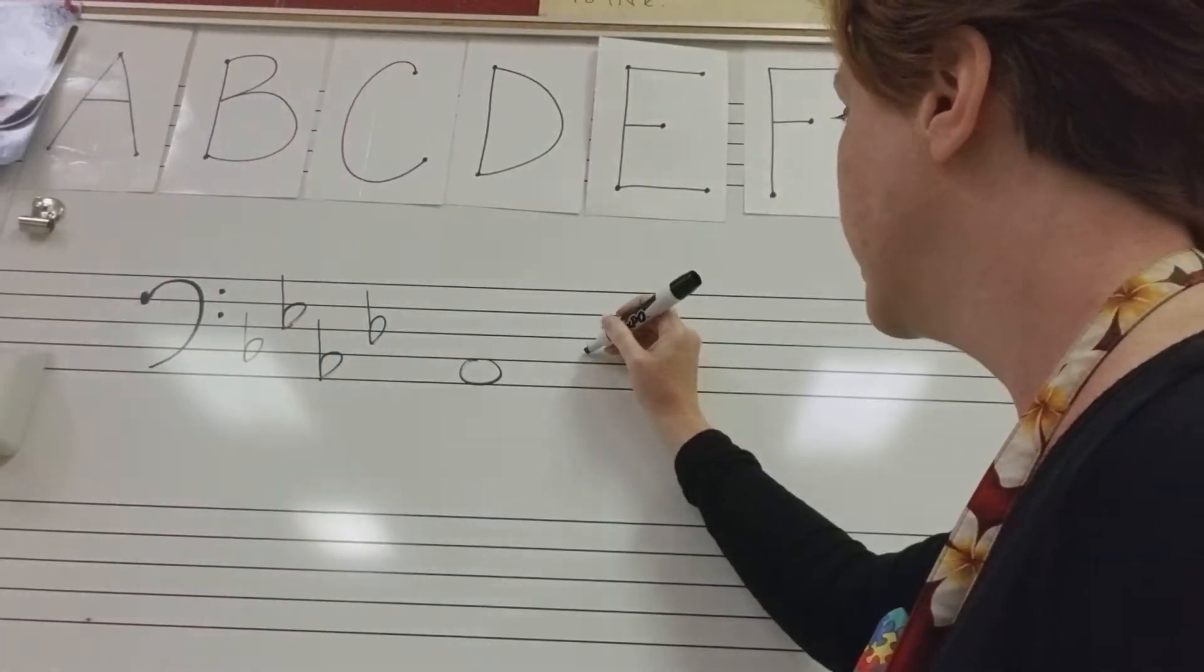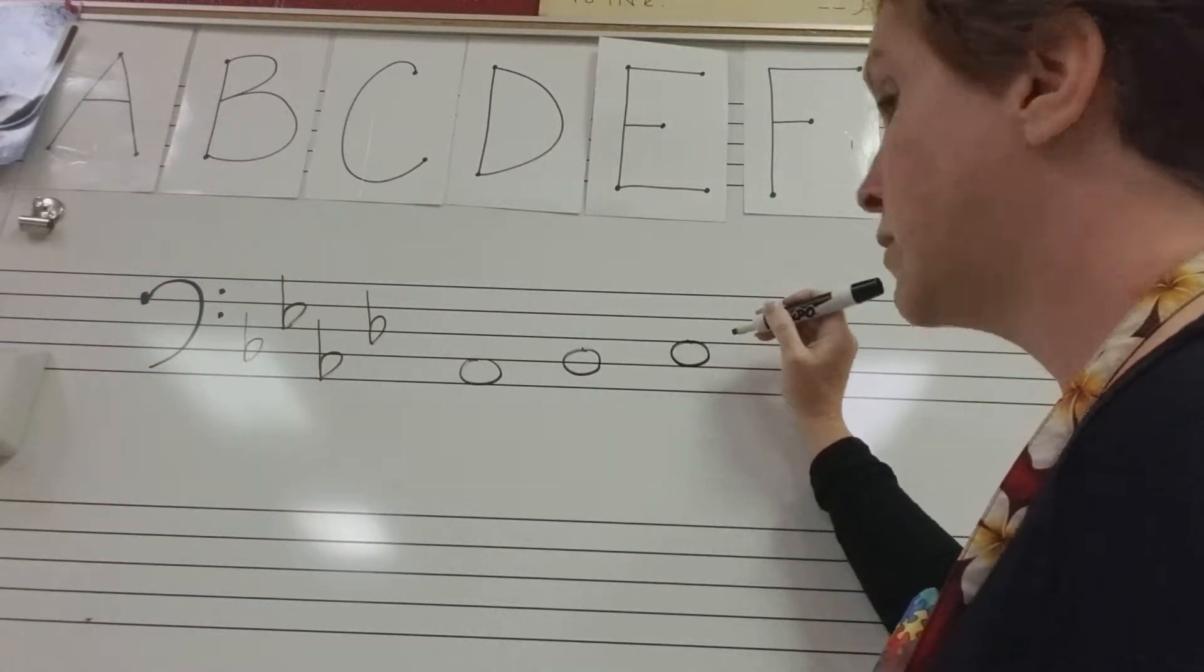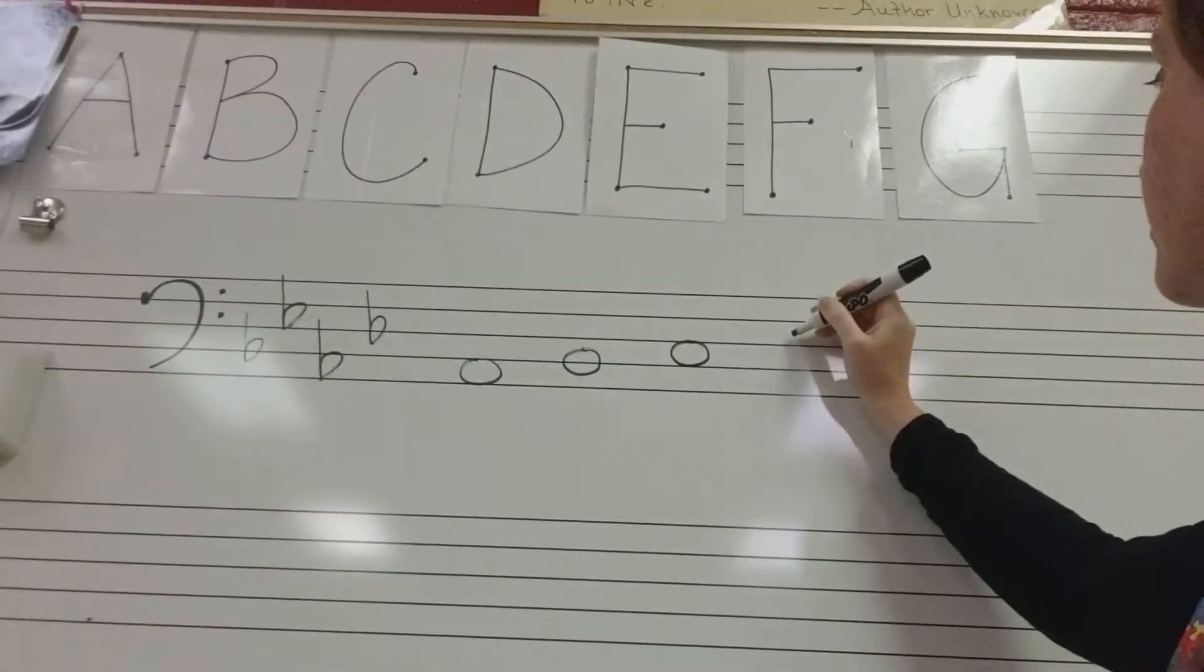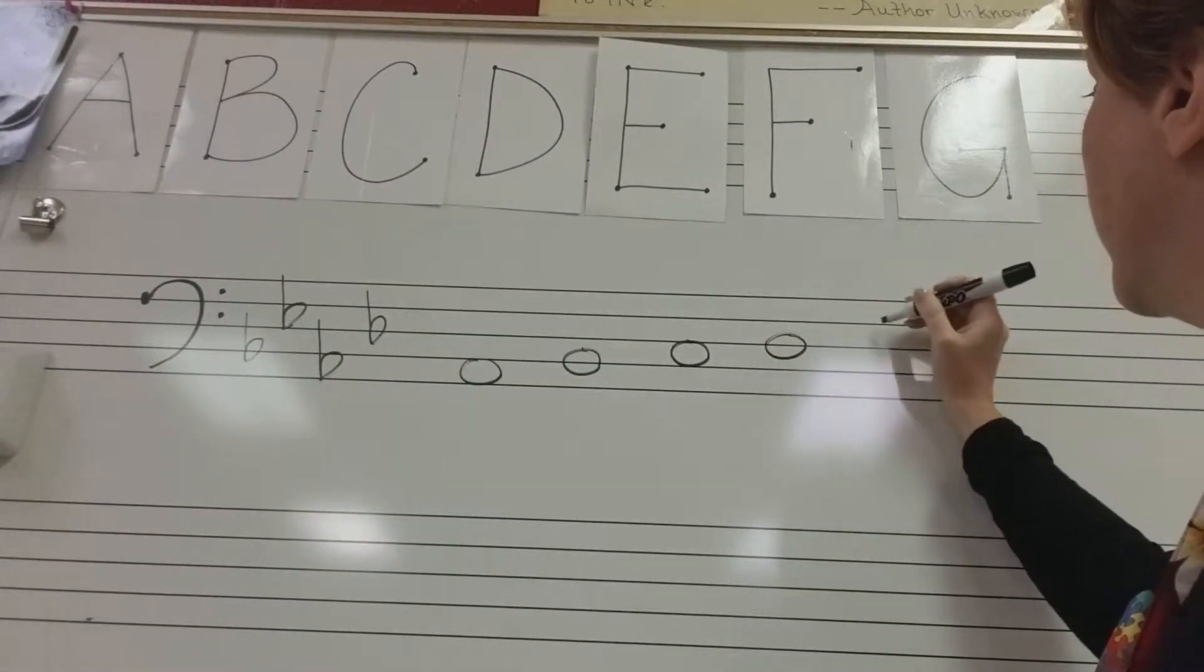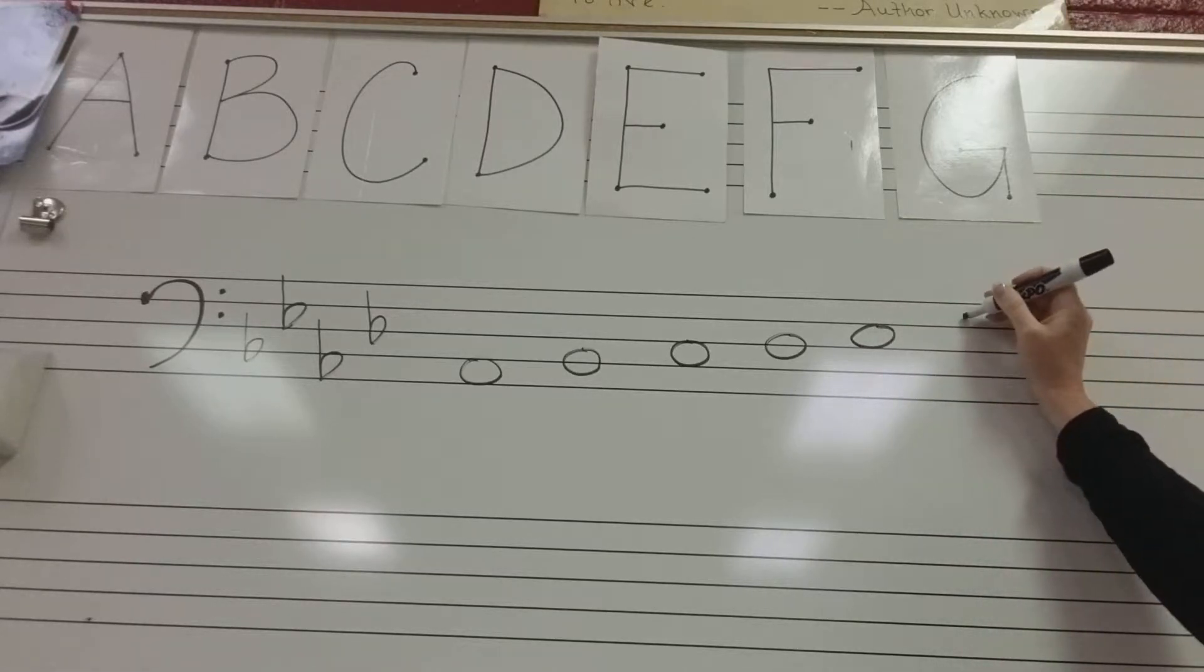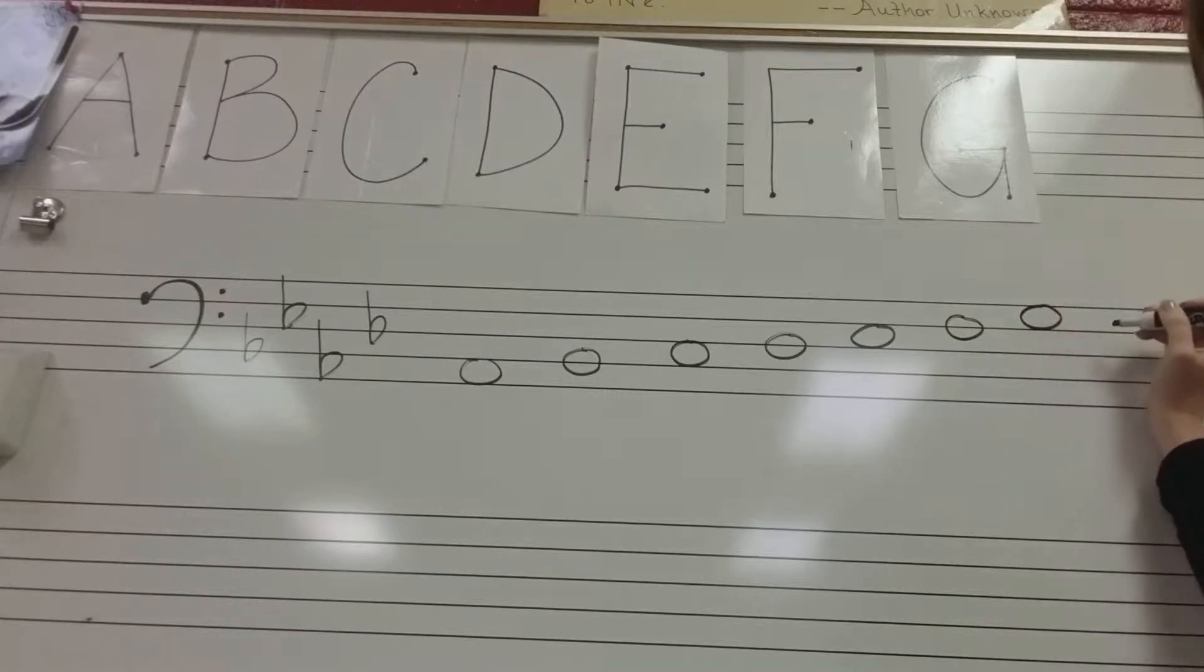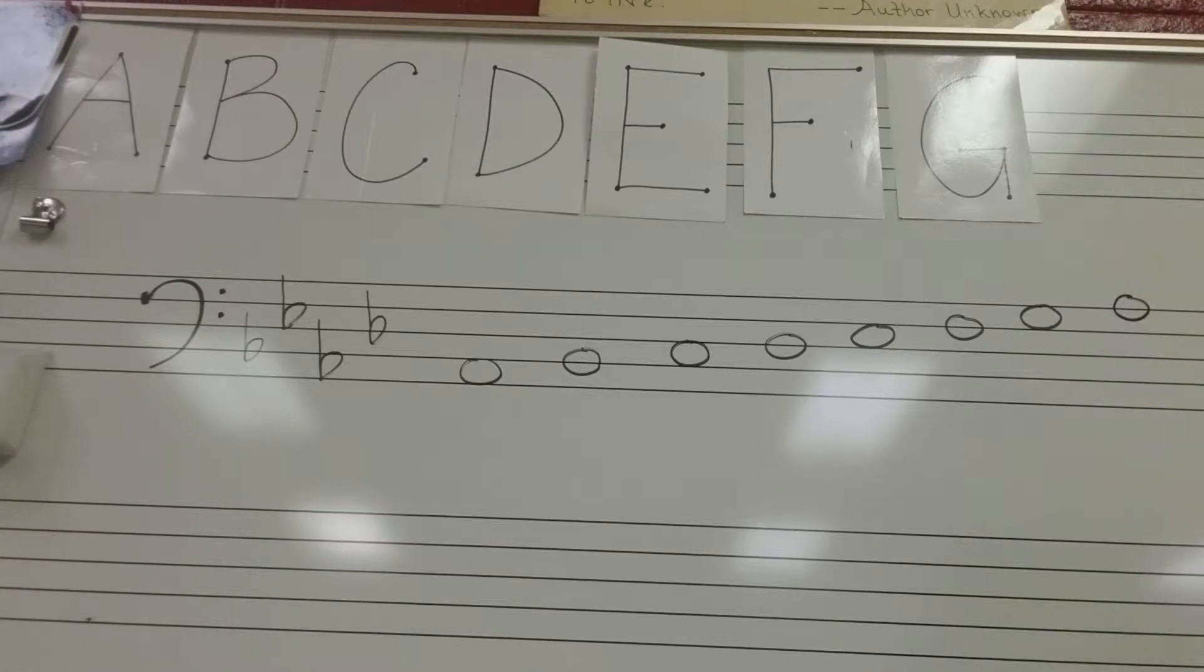So here's your A-flat, then second line, second space, third line, third space, then your fourth line, fourth space, and then finally you're going to end up on the very top line.